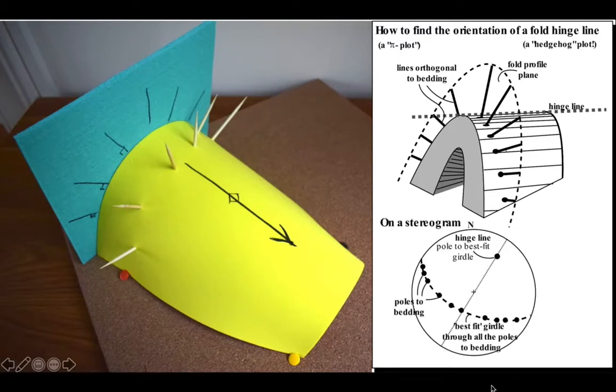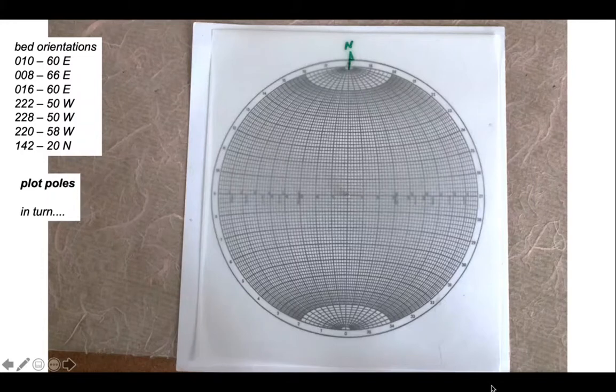What we need to do is put our poles to bedding and find the best fit great circle, a girdle through all those poles, and then use that best fit girdle to find the hinge line. Here's our stereographic projection with an array of seven bedding readings measured across a fold, and we're going to plot the poles to these beddings in turn.